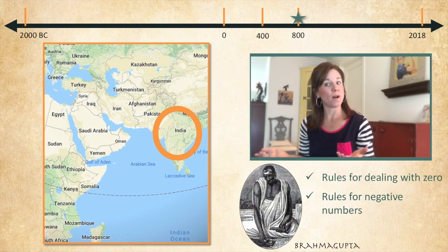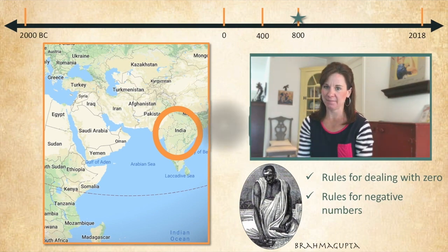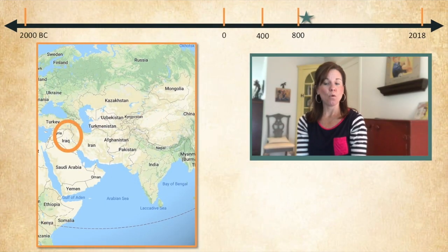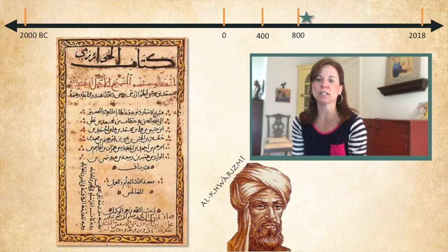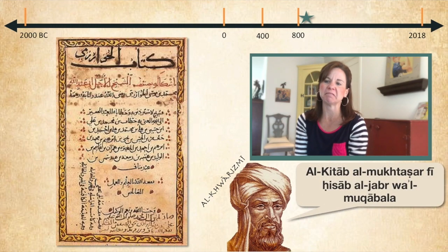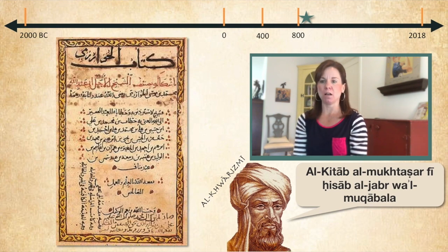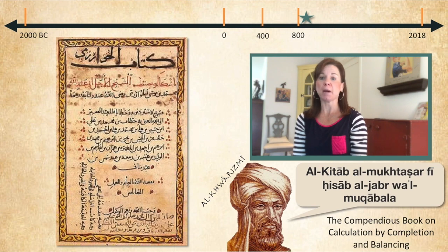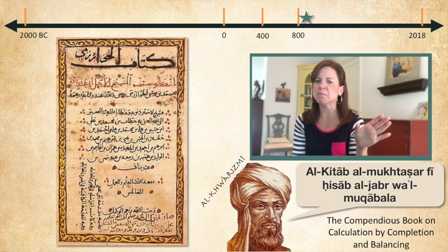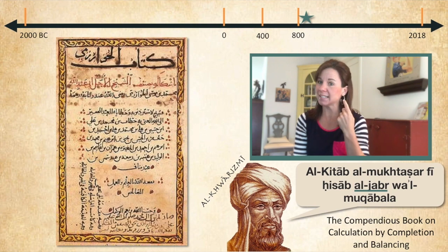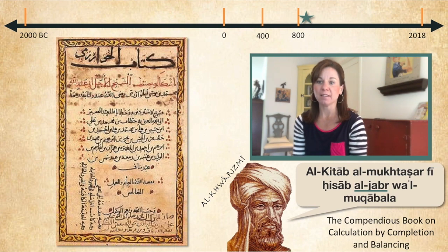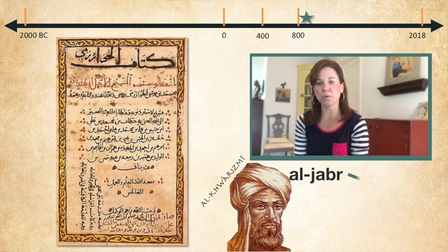We're going to fast forward only 20 years to 820 AD. And we're now in Baghdad, where we meet Al-Khwarezmi. And he wrote a book — there's a page of it — called... I'm not going to attempt that. But if we translate it, his book was called The Compendious Book on Calculation by Completion and Balancing. It totally hit the bestseller list, went viral in the ancient math community. And why is this interesting? Check out this word: algebra. It should at least sound a bit familiar. Algebra — this book is where we get our modern word algebra, and it means the restoration of broken parts. Isn't that cool?